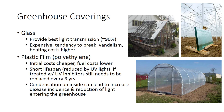Glass provides the best light transmission of any greenhouse covering, transmitting about 90 percent of the light that strikes its surface. However, glass greenhouses are expensive to construct, maintain, and operate. Glass has a tendency to break easily, is subject to vandalism, is heavy, does not retain heat well, and limits the greenhouse designs that can be used.